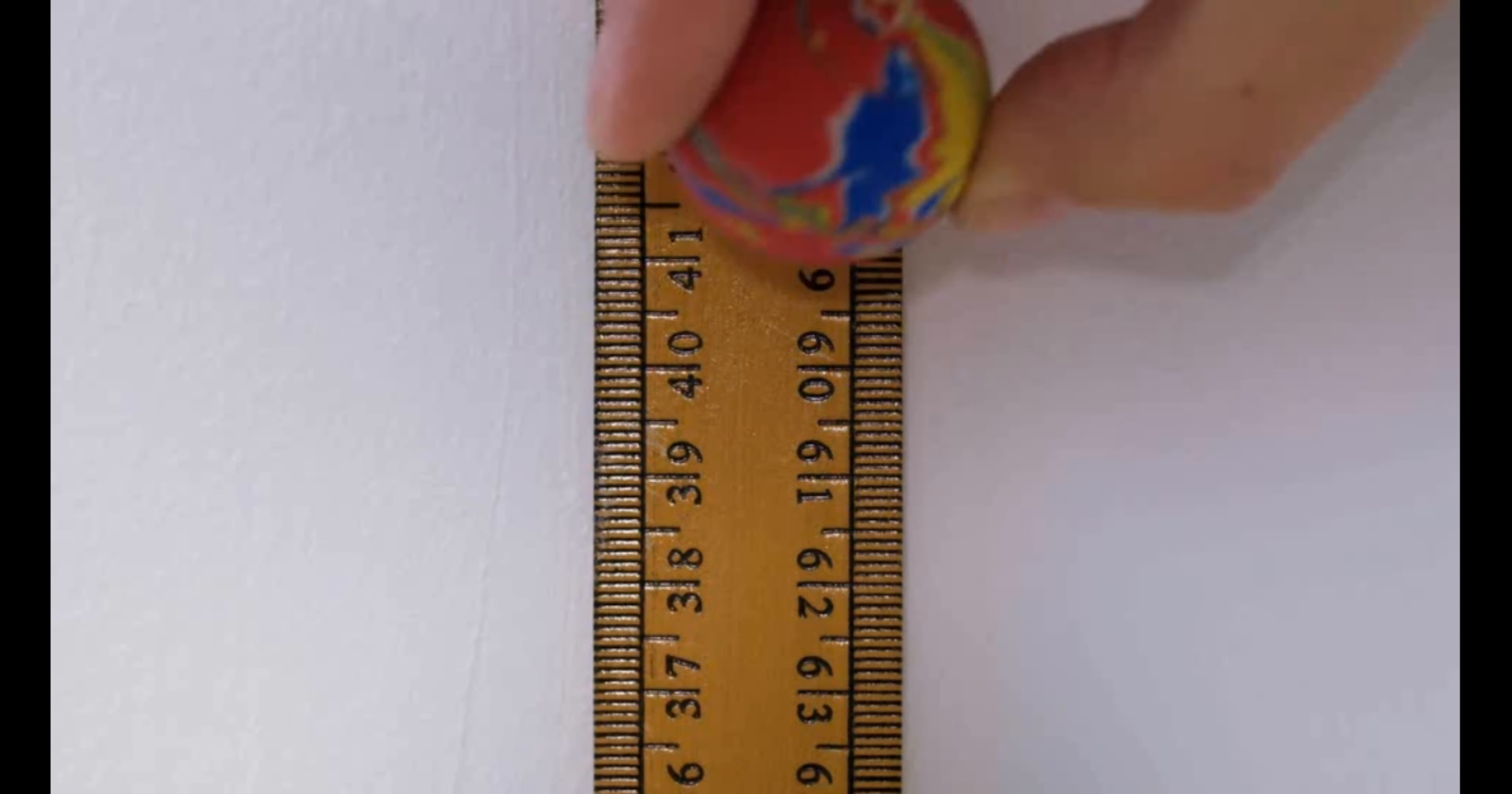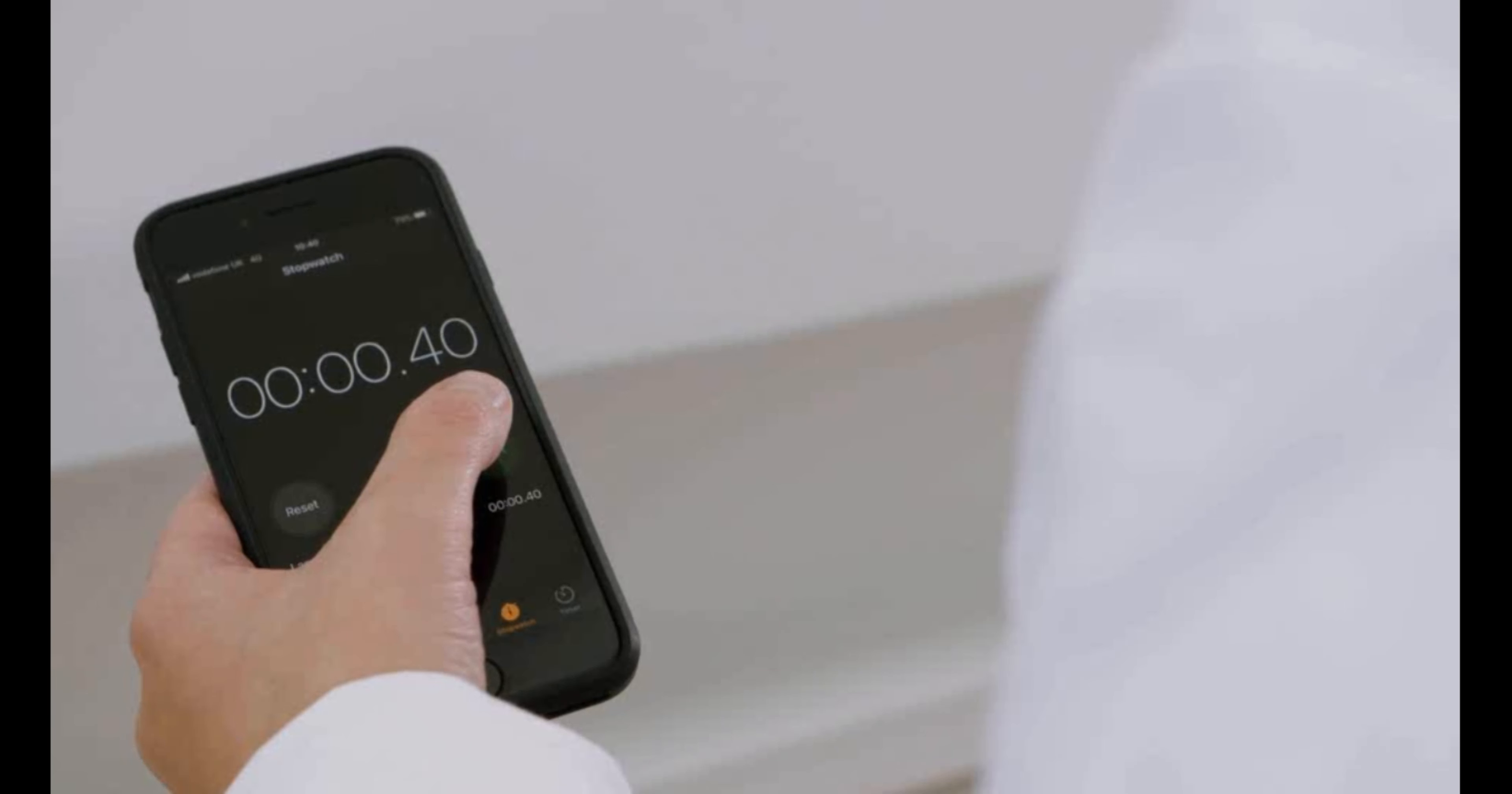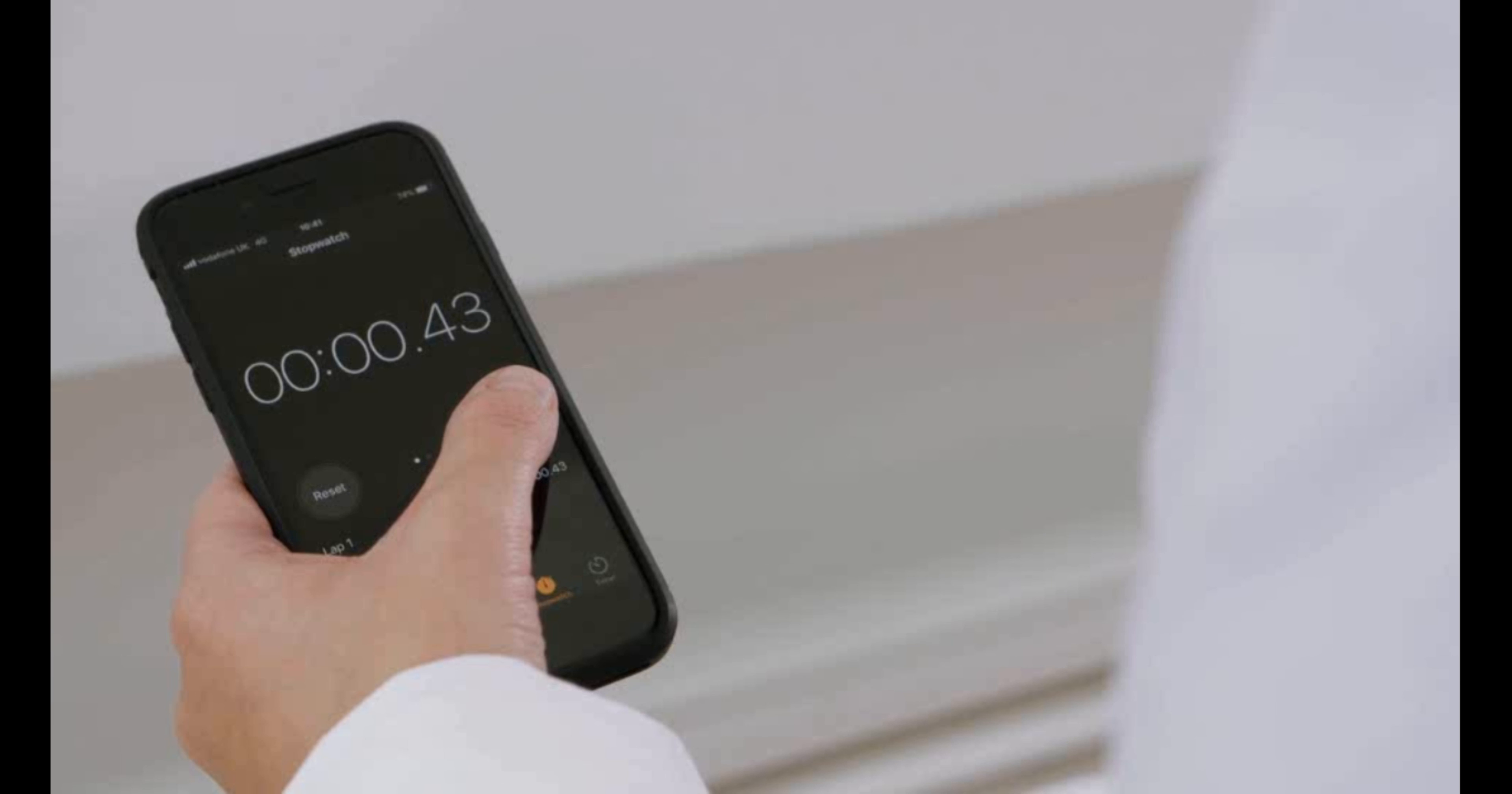The ball is now dropped from 1.4 metres and the time is recorded. For each new height, three repetitions are carried out so that an average can be recorded.